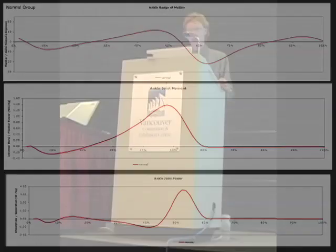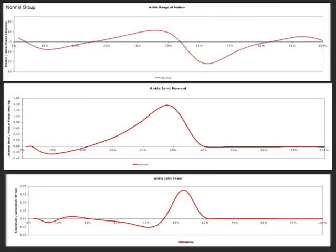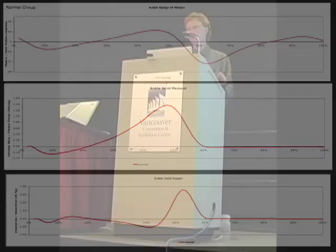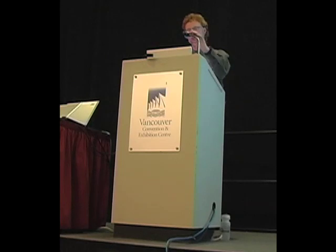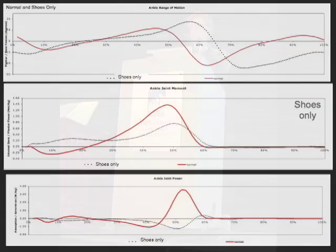Normal, averaged angle, range of motion at the top, internal moment in the middle, and power profiles over our gait cycle are shown here in red. I'm only going to be showing you the right side today. Over the top of the normal is the shoes-only condition, and that's represented by the dotted line.